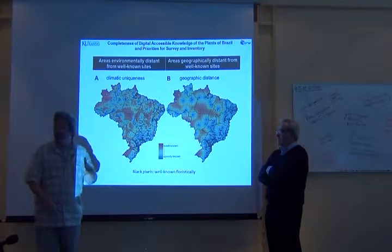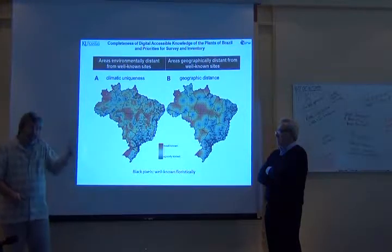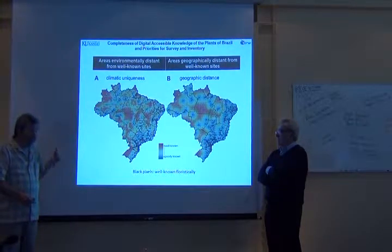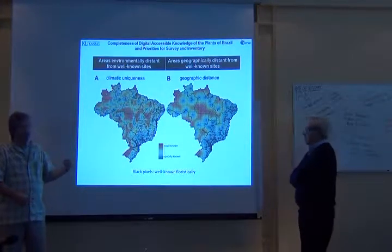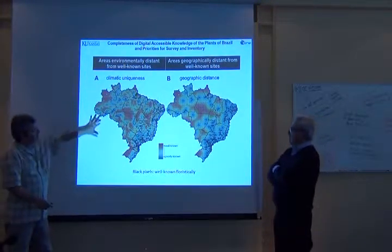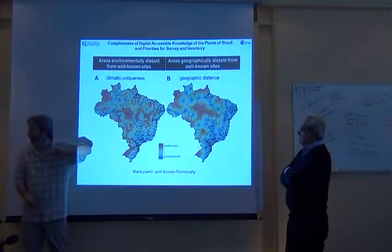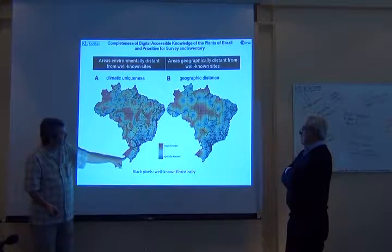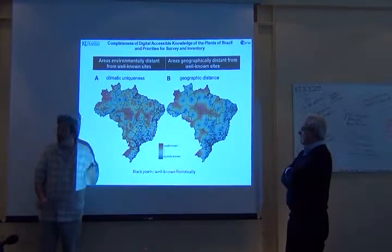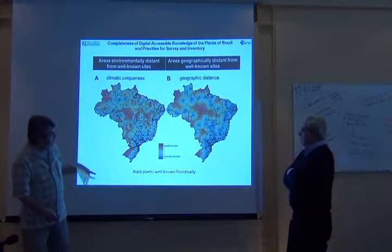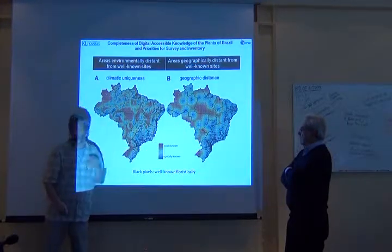For every single pixel across Brazil, I'm going to measure the distance in climate space to the nearest well-characterized pixel. If the pixel is well characterized, then the distance is zero. But if it's a climate combination that's very poorly surveyed in general, I'm going to get a long distance. That's what this map shows — zero at the black pixels because those are well characterized. She actually used the wrong legend — it's long distance to short distance. Sorry about that.